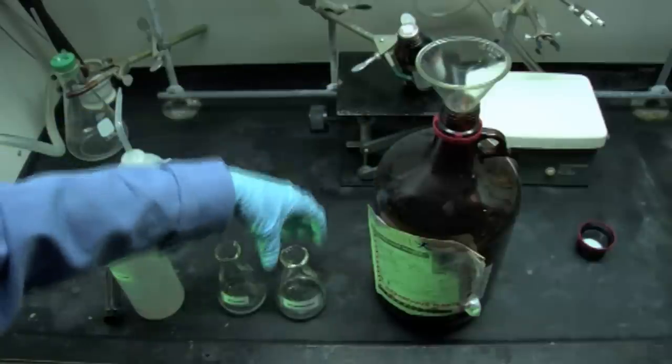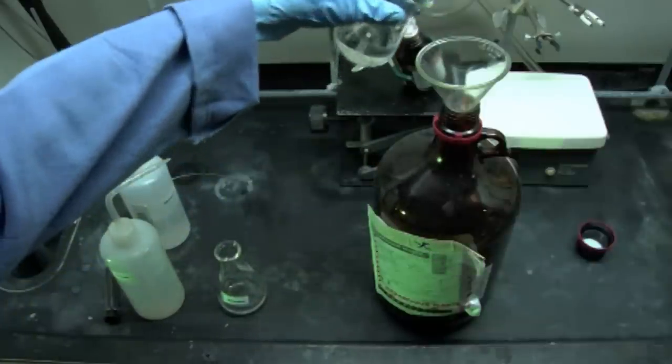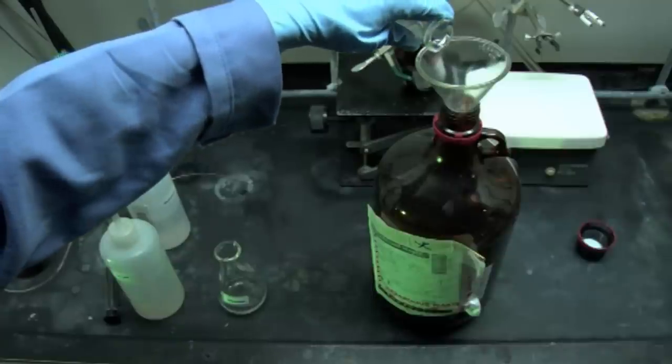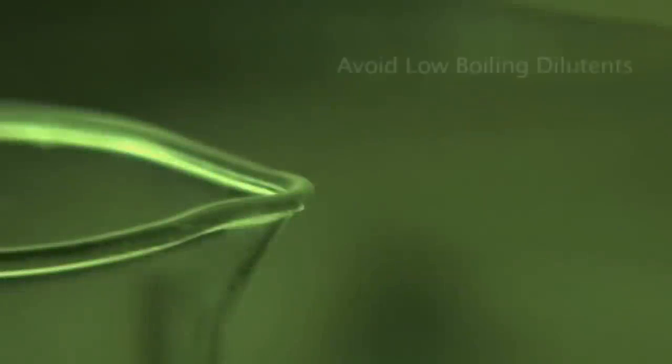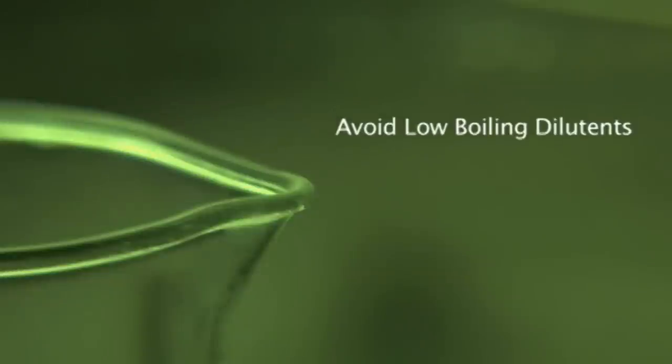Alternatively, reactive substances can be quenched by slowly adding the dilute solution to dry ice, then adding a mildly reactive quenching agent, such as methanol. Avoid low boiling dilutants, such as ether or pentane, which tend to condense water upon evaporation.